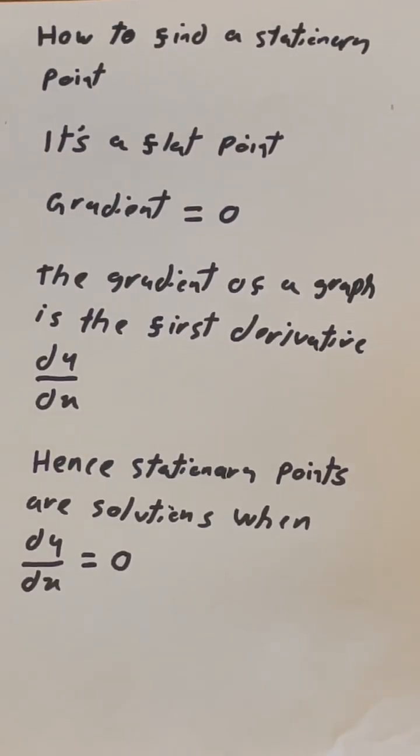How do we find the stationary point? It's simply a flat point. This means its gradient is equal to 0. The gradient of a graph is the first derivative. Hence, the stationary points are the solutions when we equal the first derivative to 0.